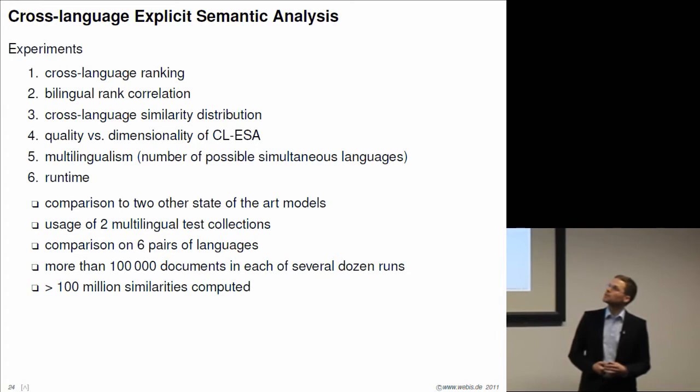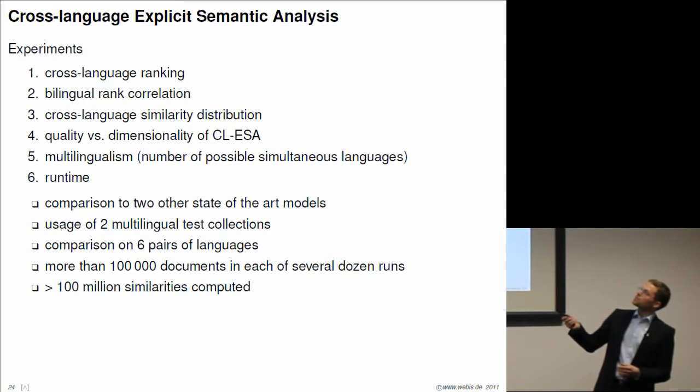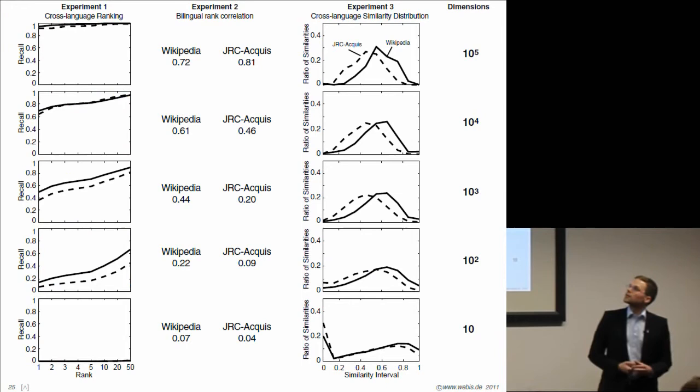We do that for the German language as well. By this construction, by representing this document as this vector which is positioned in a vector space spanned by the concepts of Wikipedia articles, we can compare them across languages with less problems. We have done quite a number of experiments on this. We have done six experiments to test our model out. For instance, we have tried to rank documents across languages. We have tried to compute a correlation of this model to another document model which works robustly and see how well it does.